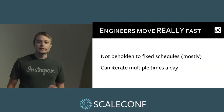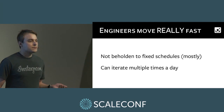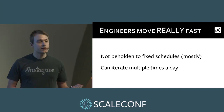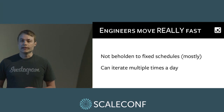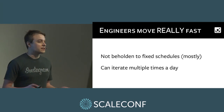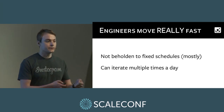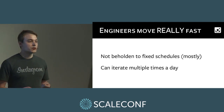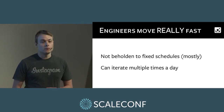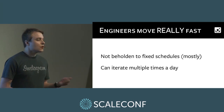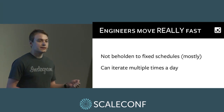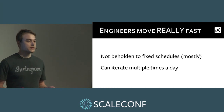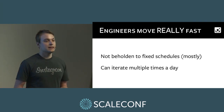This also means engineers can iterate multiple times a day. Sometimes you're working on a problem where you need to get your code into production before you can decide what to do next — maybe you're debugging a complex problem and need to keep collecting different bits of data as you follow the trail, or you're squashing bugs which only appear once your code is actually live. With continuous deployment, engineers can do this as many times a day as they want.